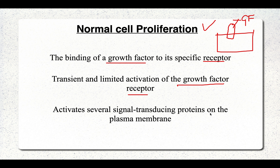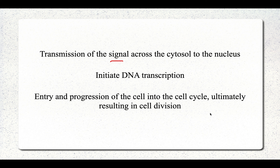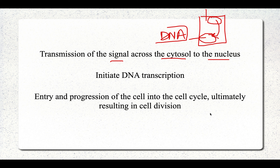When the receptor is activated, several signal transducing proteins present on the plasma membrane get activated. The signal is then transmitted from the cytosol to the nucleus, where DNA transcription begins and the cell cycle proceeds. This is how normal cell growth and proliferation takes place.